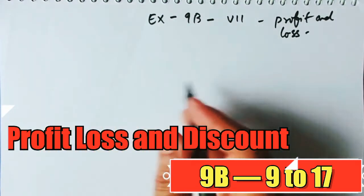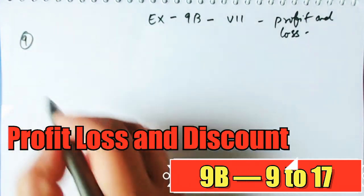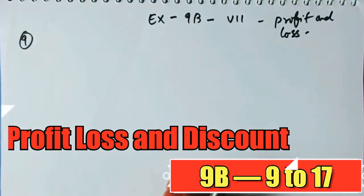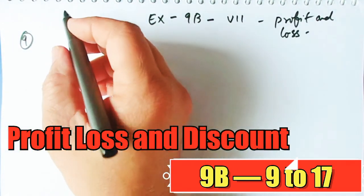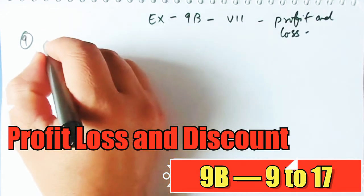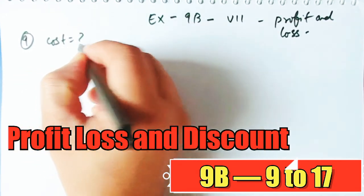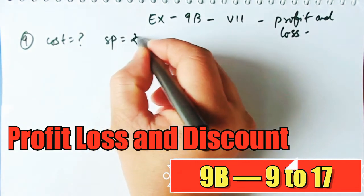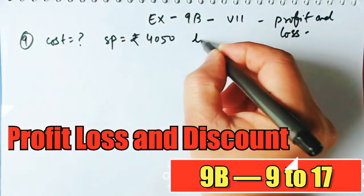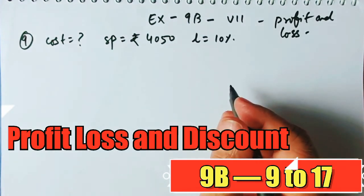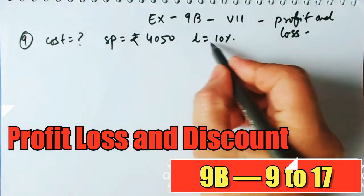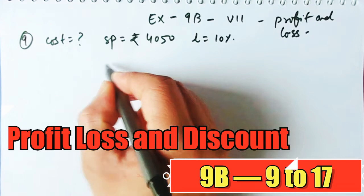You should have a very clear idea about how much gain or loss you have incurred, and also the gain or loss in percentage. In number 9, we need to find the cost price of an article when the selling price is given as ₹4050 and the loss is 10%.